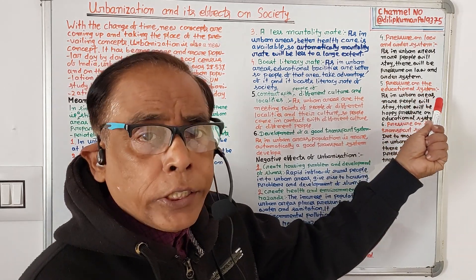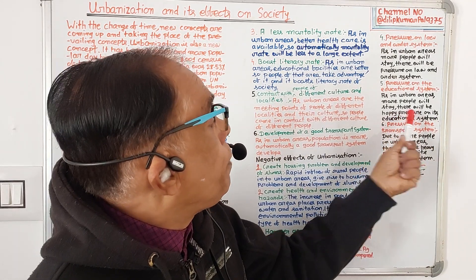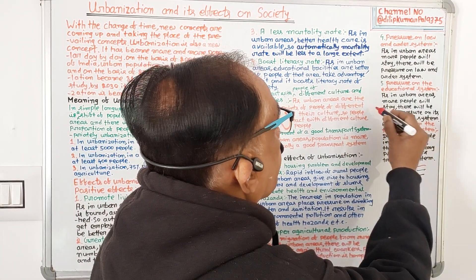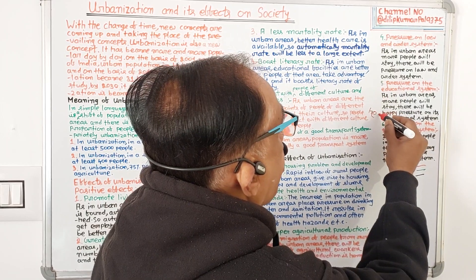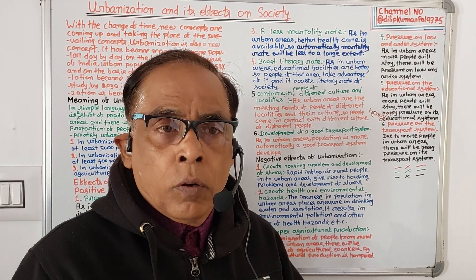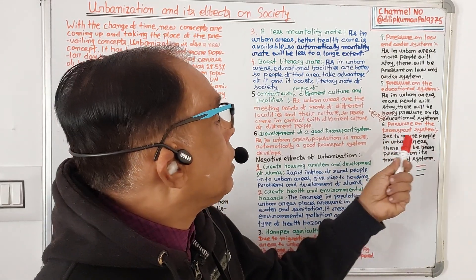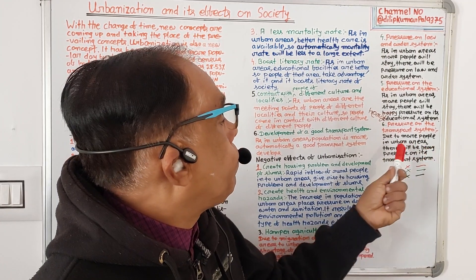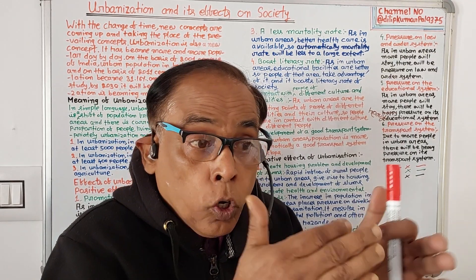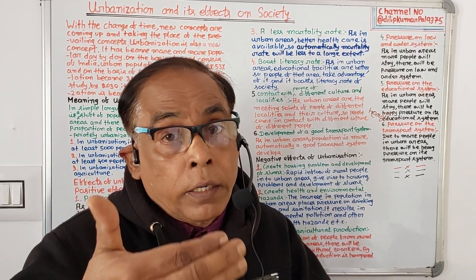Number five: pressure on the education system. As in urban areas more people will stay, there will be pressure on the education system. Finally, there will also be pressure on the transport system. Due to more people in urban areas, there will be heavy pressure on the transport system.